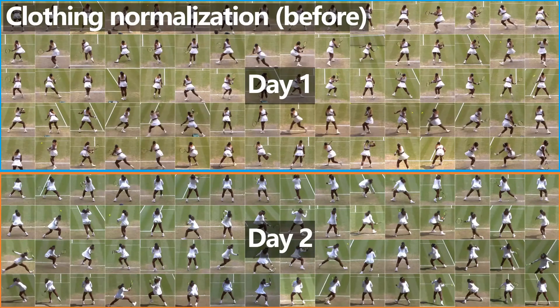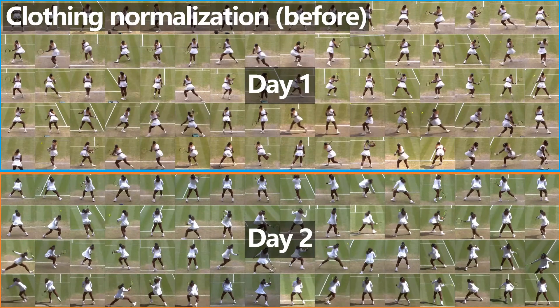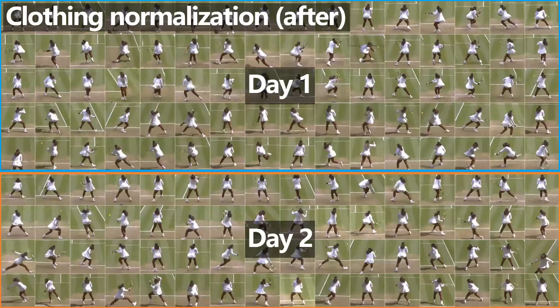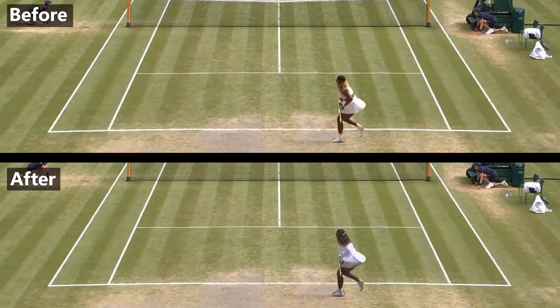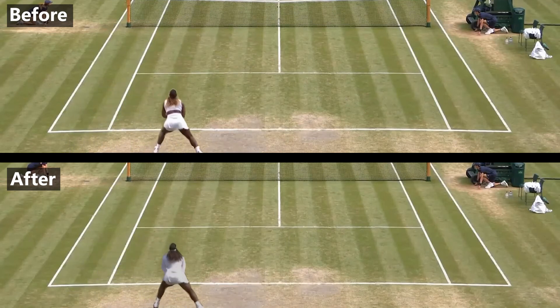We apply the same unpaired image-to-image transfer technique to address Serena Williams' clothing differences across match days — for example, she wears a long-sleeved top on the second day. The normalized results show Serena wearing the long-sleeved top in all frames, correcting the visual discontinuity.